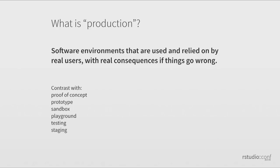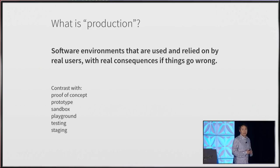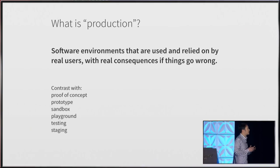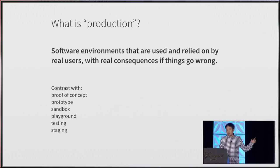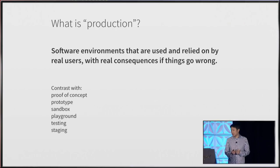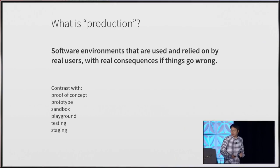Before we go any further, let's talk about what production even means. I define production as software environments that are used and relied on by real users with real consequences if things go wrong. Real users — not developers and testers — people who really need your stuff to work. The antonyms of production environments would be proof of concepts, prototypes, and sandboxes — places where you expect things to go wrong. That is not the case with production. Nobody's having a good day if you find bugs or have outages on production.